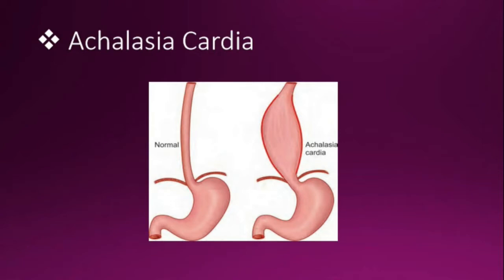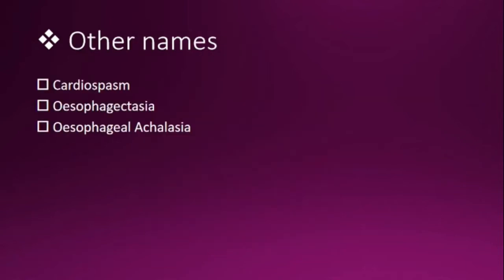It involves the smooth muscle of the esophagus. You can see here the picture of achalasia cardia. There is dilatation of the proximal part of the esophagus because innervation goes to the lower end. In achalasia cardia there is no innervation and it remains constricted, but when food comes the upper part becomes automatically dilated.